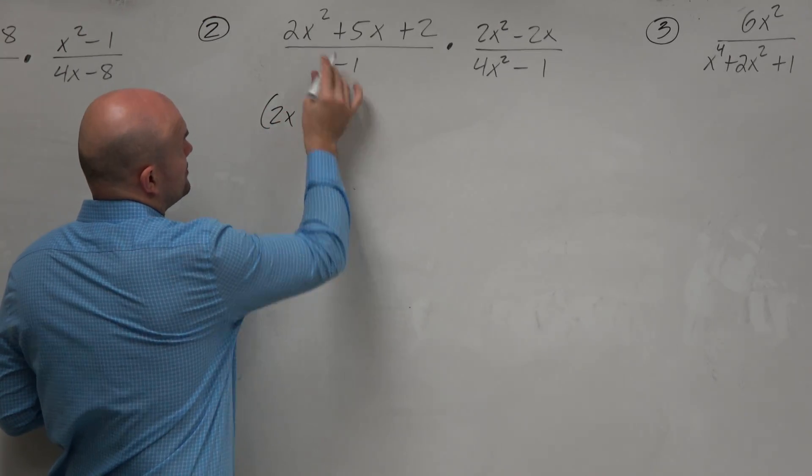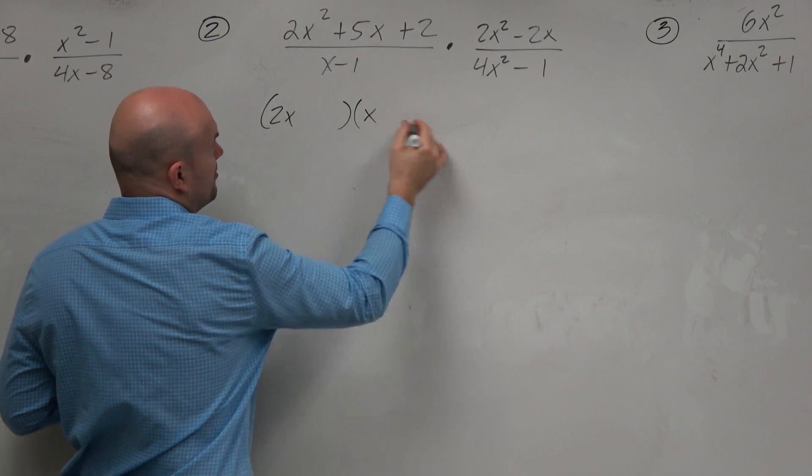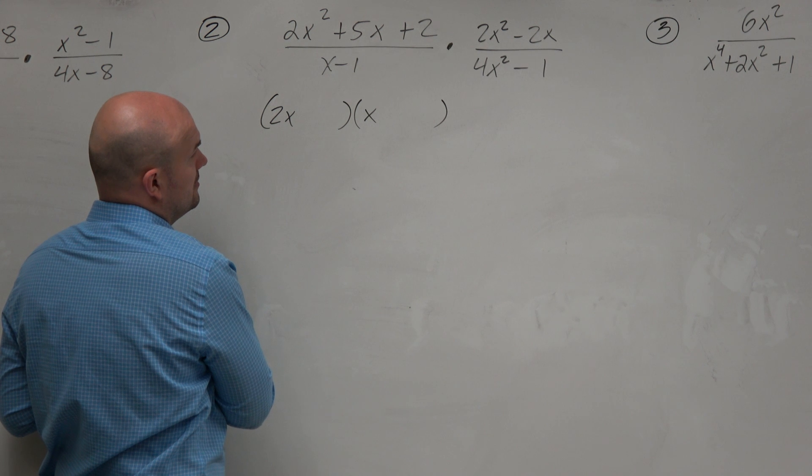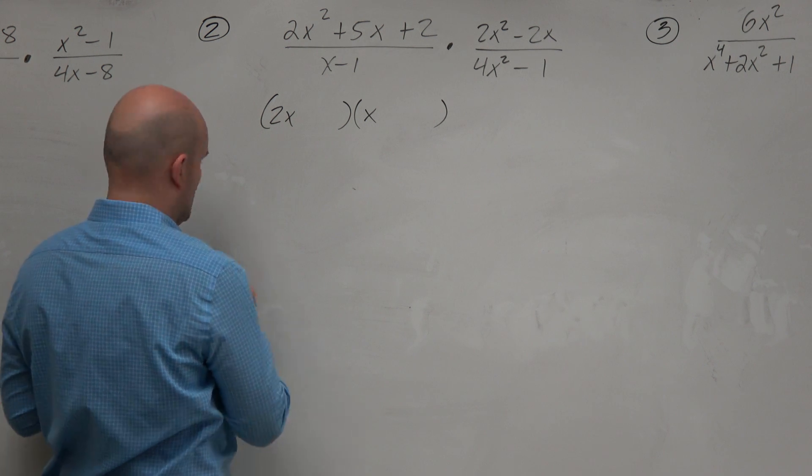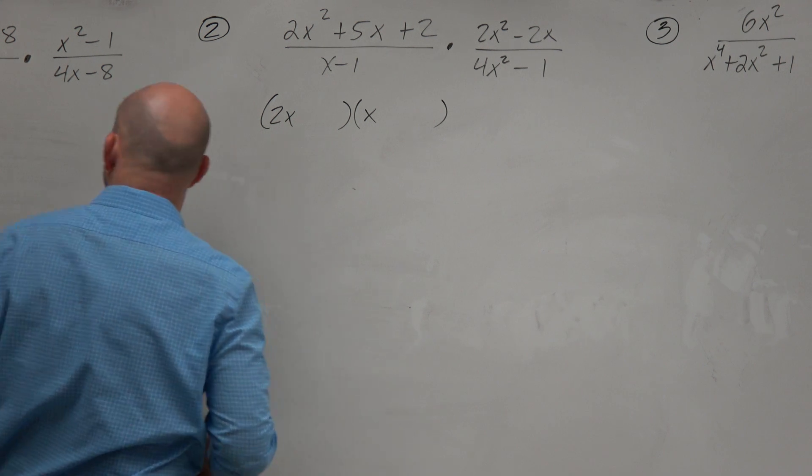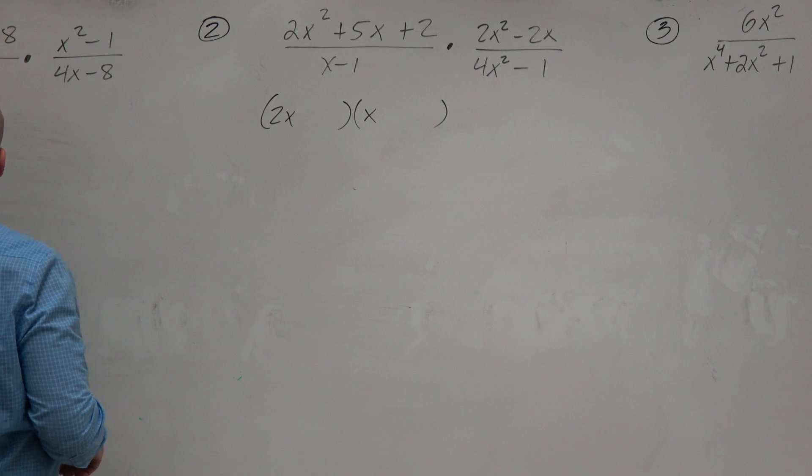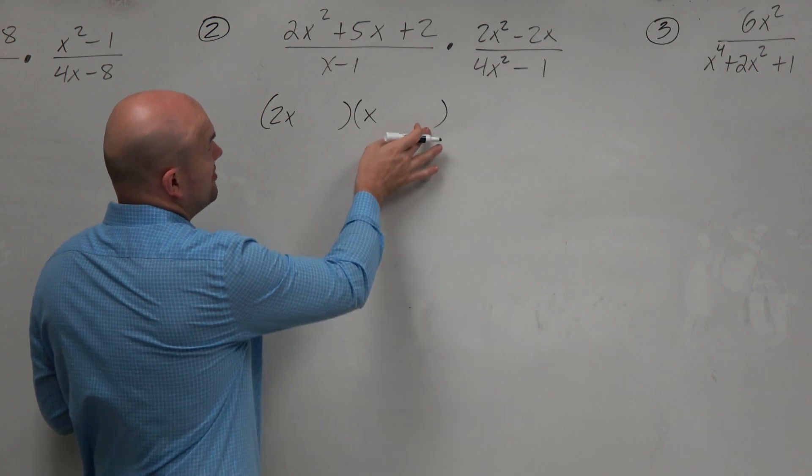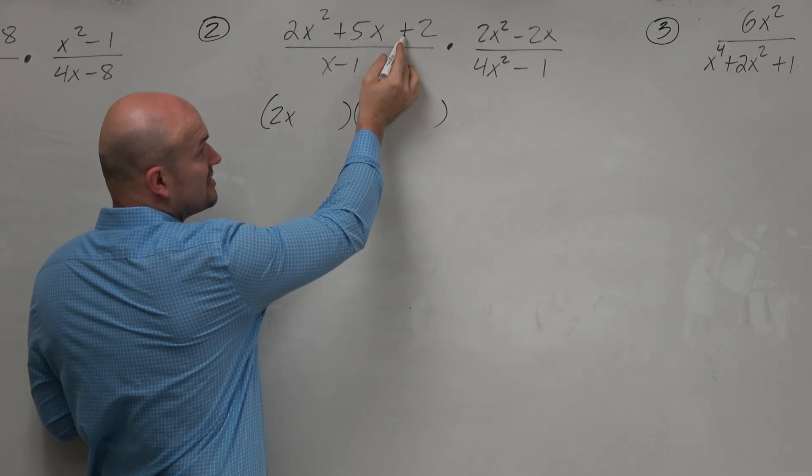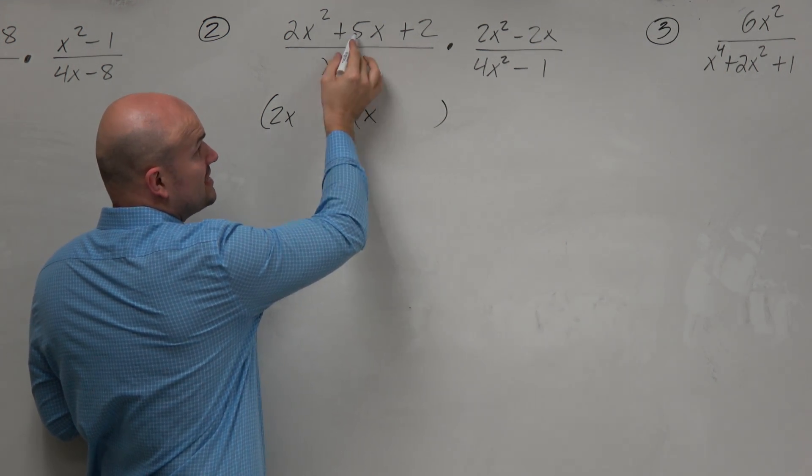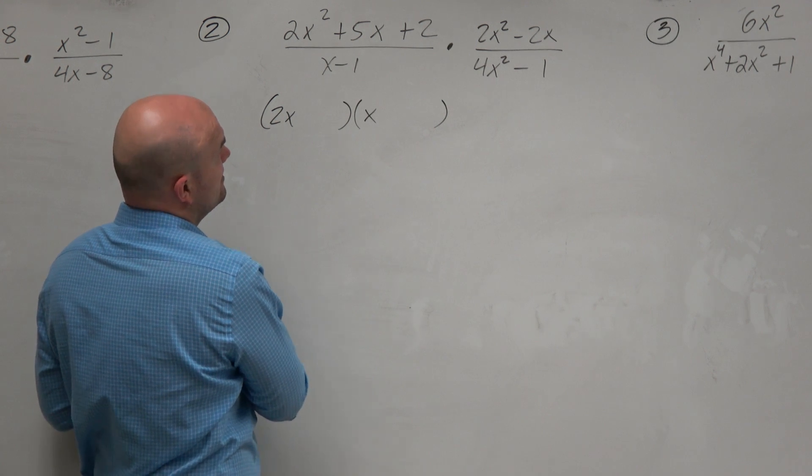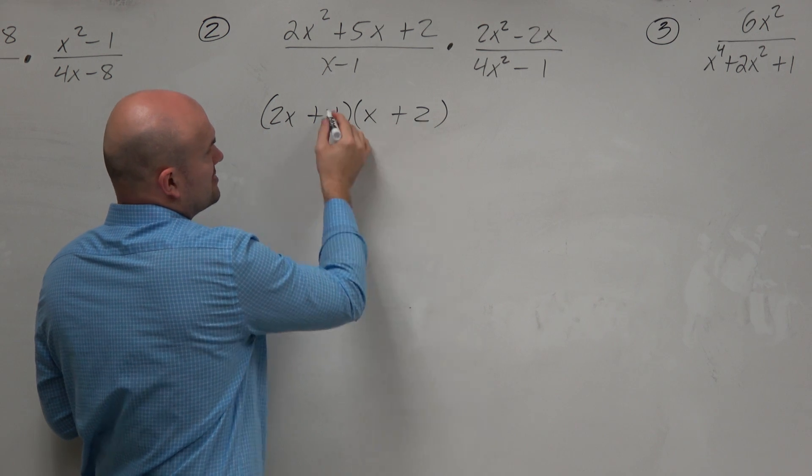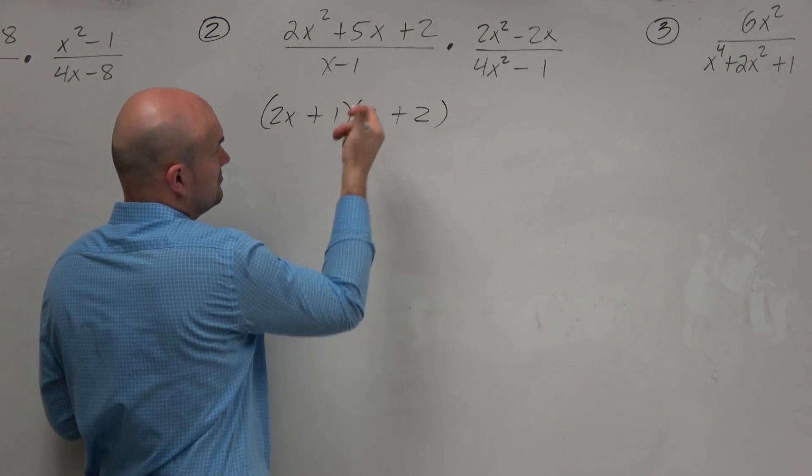So let's see, I know this trinomial can be broken down into a product of two binomials. So this can be broken down to a product of two binomials. They need to multiply to give me two. Since that's an addition, that means it's going to be a sum to give me 5x. So I'm thinking plus two and plus one. 4x, 1x, that's 5x. Looks good to me.